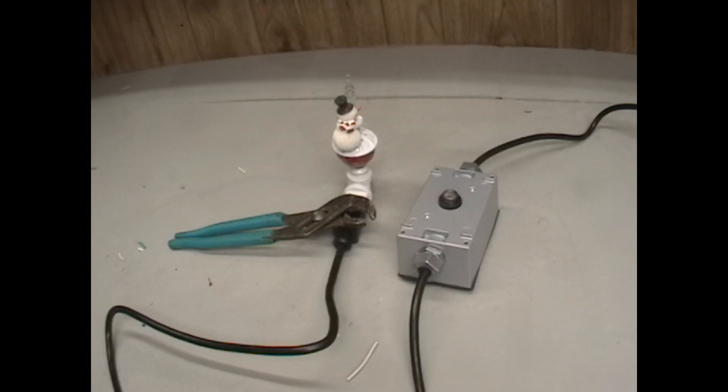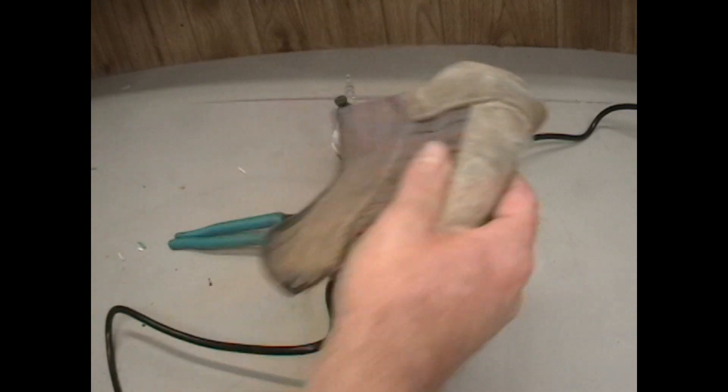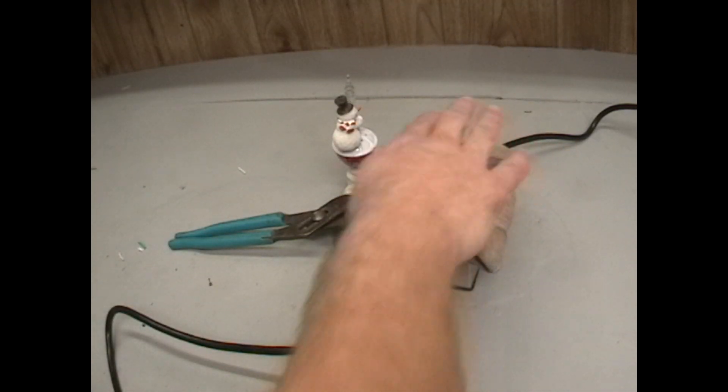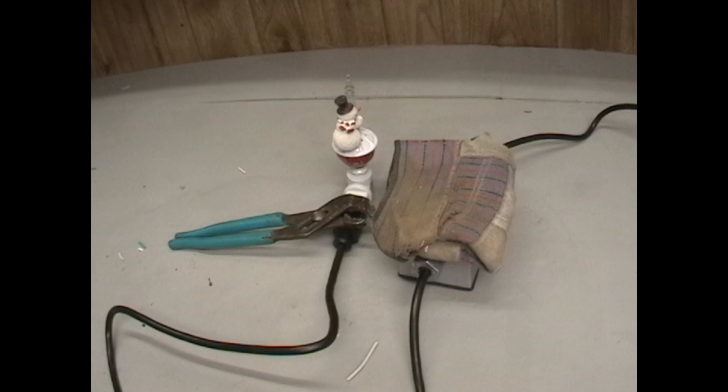Okay, I got our box put back together and I've got a little snowman nightlight on the end of the cord. I'm just going to put this glove over it and see if we can get it to come on. This is probably suitable for wet locations, but it may be better if you just use it on a patio or front porch or something like that.